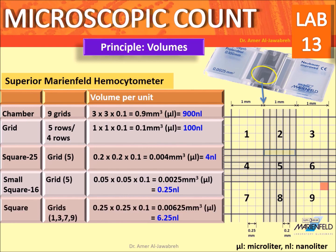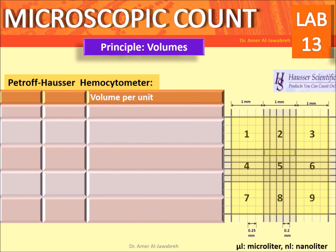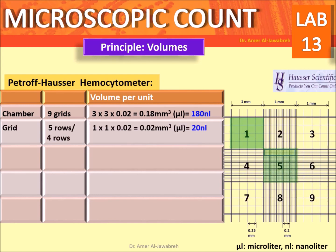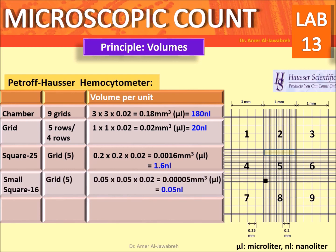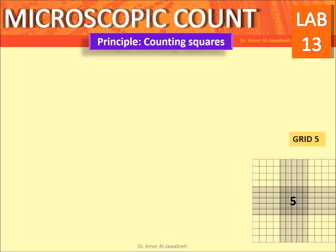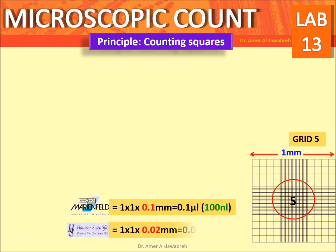In grids 1, 3, 7, and 9, the squares have volumes of 6.25 nanoliters each. For the Petroff-Hauser hemocytometer: each chamber consists of 9 grids with a total volume of 180 nanoliters. Each of the 9 grids has a volume of 20 nanoliters. Each of the 25 squares in grid 5 has a volume of 1.6 nanoliters. Each of the 16 small squares in grid 5 has a volume of 0.05 nanoliters. In grids 1, 3, 7, and 9, squares have volumes of 1.25 nanoliters each.